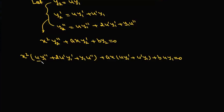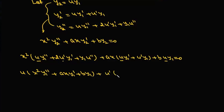We group terms of u together: u(x²y₁'' + axy₁' + by₁), which equals zero. Then we group terms of u': u'(2x²y₁' + axy₁). Finally we have x²y₁u'' = 0, giving us: u'(2x²y₁' + axy₁) + x²y₁u'' = 0.